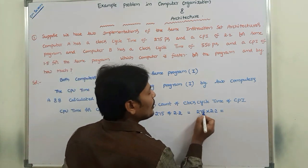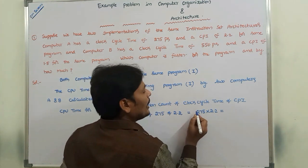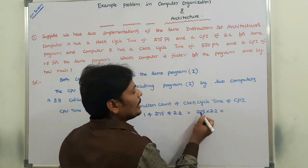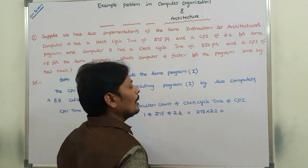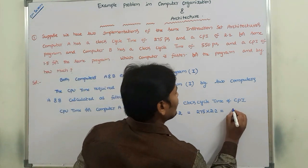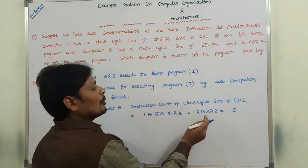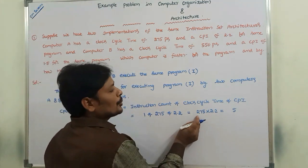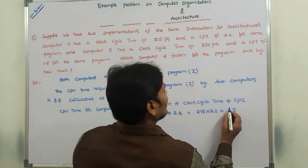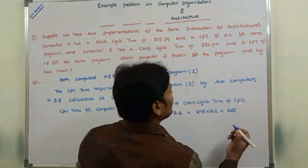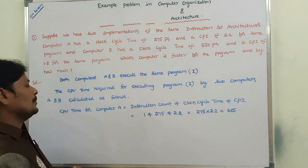Calculating 275 into 2.2: 22 into 5 is 110, 22 into 7 is 154, giving 165, plus the carry. 22 into 2 is 44. The result is 605 picoseconds. So CPU time for Computer A is 605 picoseconds.